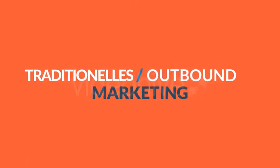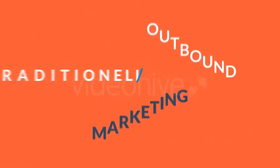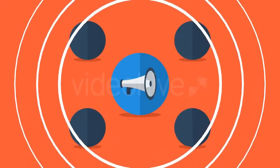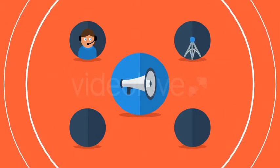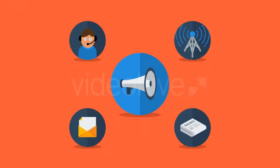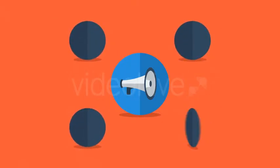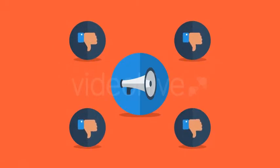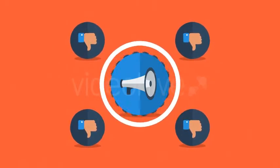Content oder Inbound Marketing — bevor ich Ihnen gleich mehr über diesen modernen Marketing-Ansatz erzähle, müssen Sie zunächst verstehen, wie traditionelles Outbound Marketing funktioniert. Bei diesem alten Konzept ist der Kernpunkt des gesamten Prozesses die Marketing-Botschaft, die Sie Ihren potenziellen Kunden unterbreiten möchten. Das kann über mehrere Wege erfolgen: Telefonwerbung, Fernseh- oder Radiowerbung, Direktwerbung oder Zeitungsanzeigen.